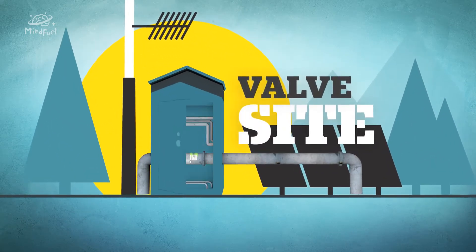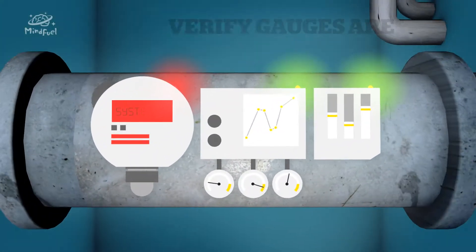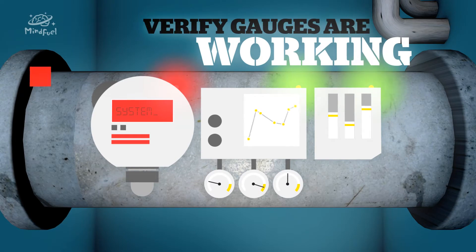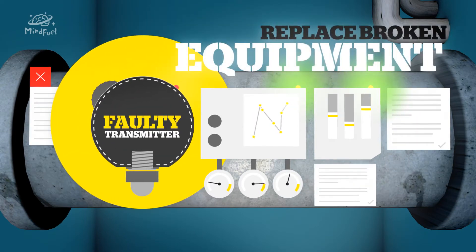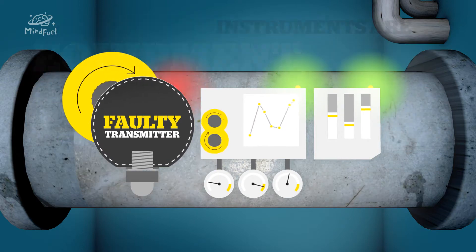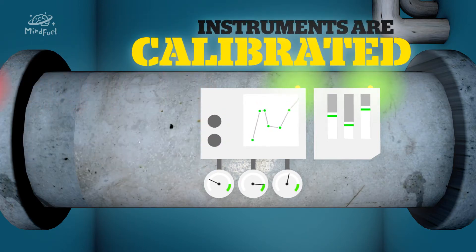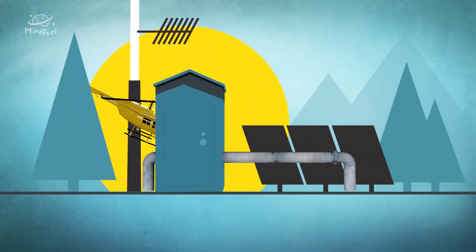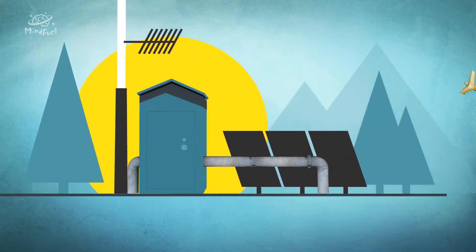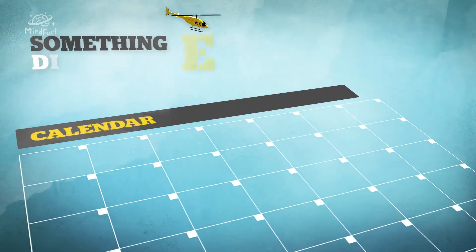We've been getting some unusual pressure readings from this valve site, so I'm going to run a test to verify that our gauges are working properly. In this case, it looks like we have a faulty transmitter, so I'm going to replace it and ensure that all instruments are properly calibrated. When I'm done, we'll head back in the chopper and find out what we're doing tomorrow. That's what's cool about this job. Every day, we're doing something different.